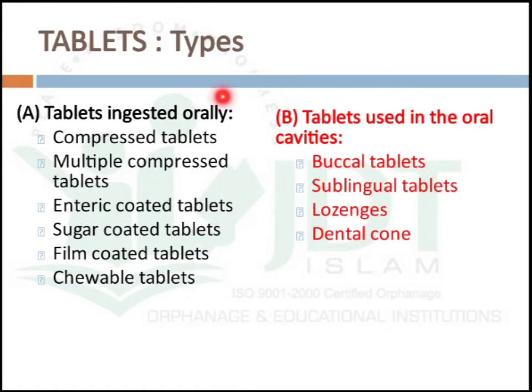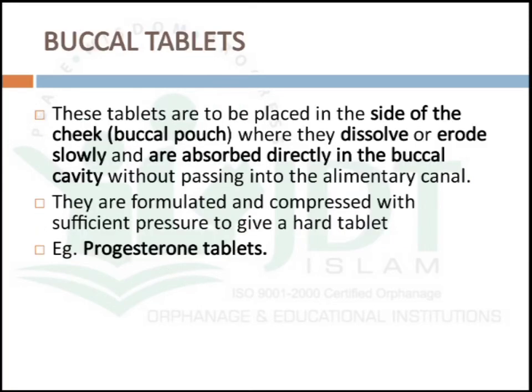The next group is tablets used in the oral cavity, including buccal, sublingual, lozenges, and dental cones. Buccal tablets are placed in the side of the cheek or buccal pouch where they dissolve or erode slowly and are absorbed directly into the buccal cavity without passing into the alimentary canal. They are formulated and compressed with sufficient pressure to give a hard tablet. An example is progesterone tablets.